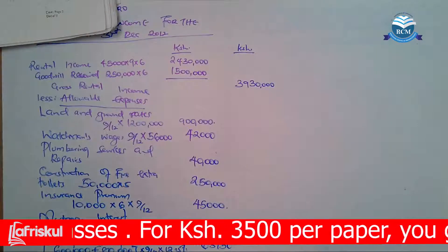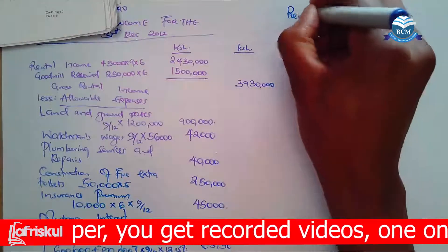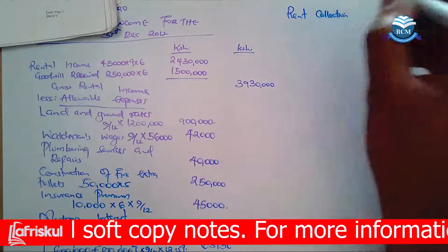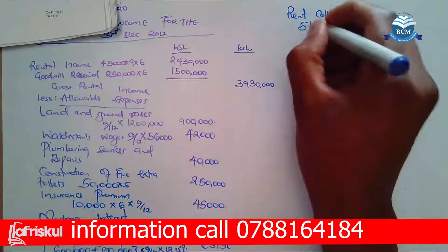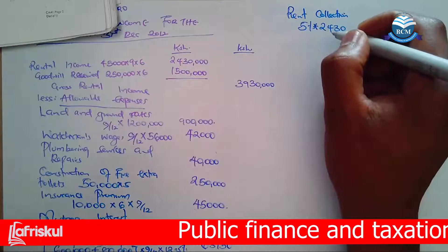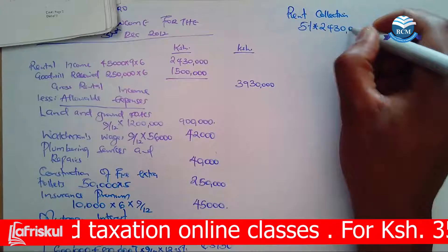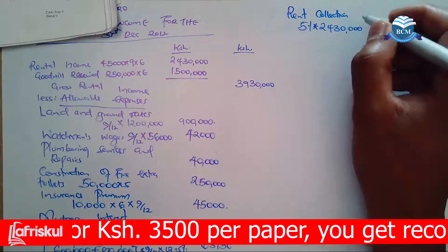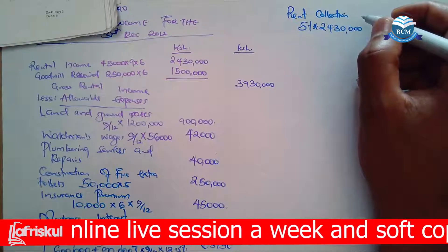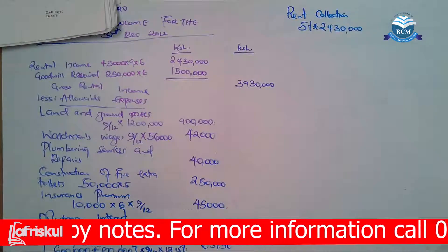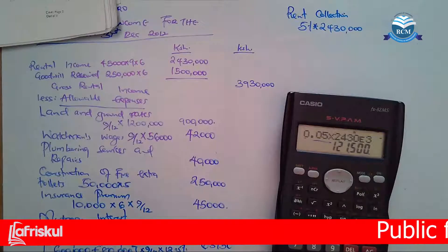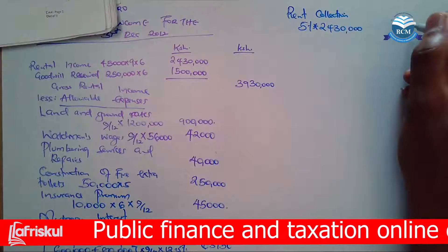You might be asking yourself why we multiply by 12.5% — because we are dealing with capital allowances. We are going to give it a Class 4 item, because Class 4 is for all items which do not fit in other classes. The other thing to take into consideration is rent collection. The cost of rent collection is 5% of gross rent. So you take 5%, multiply by the gross rent of 2,430,000. You get 121,500.